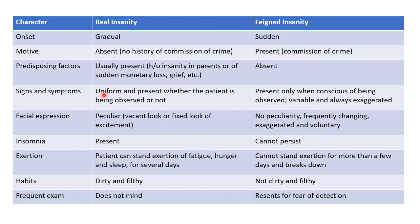The signs and symptoms in real insanity will be uniform and will be present whether the patient is being observed or not. Whereas in case of faint insanity, the signs and symptoms will be present only when the person is conscious of being observed — they will usually be variable and always exaggerated.